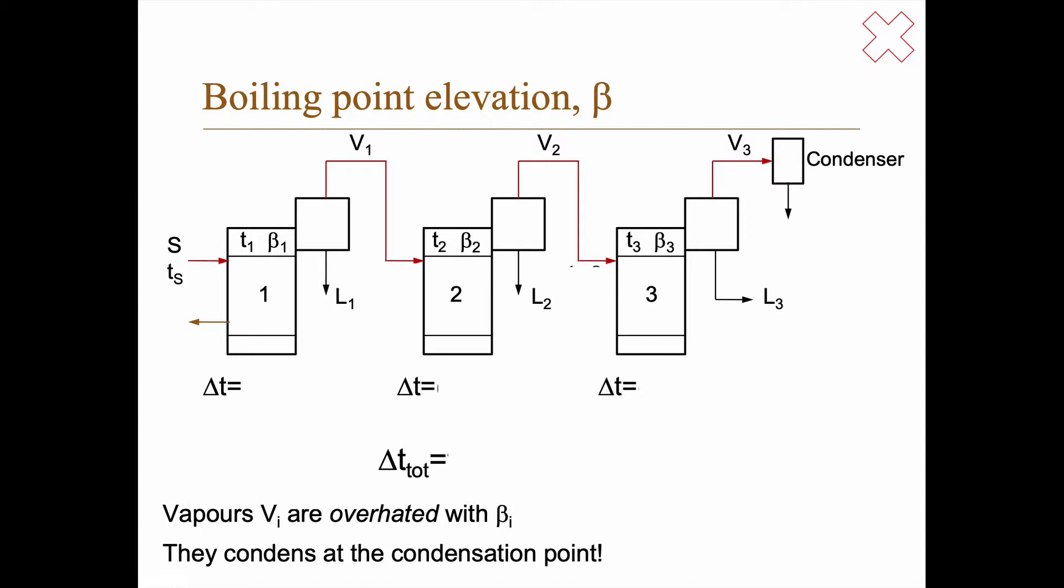How many can we have? Well we have a limitation due to the boiling point elevation. We said in the beginning here when we talked about multi-effect evaporators that TS must be larger than T1 and T1 must be larger than T2 and so on. But as it turns out that is not enough.